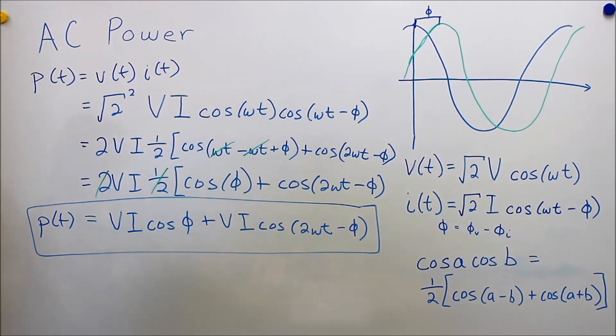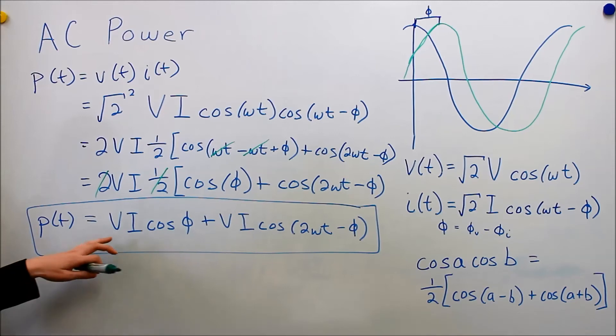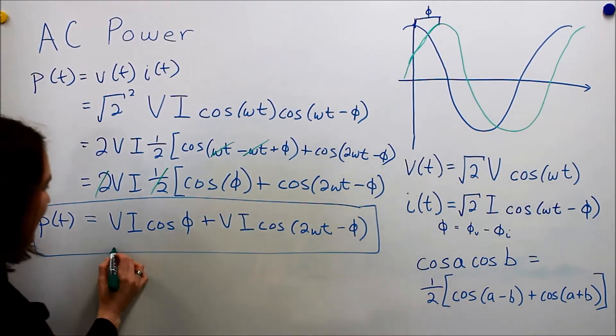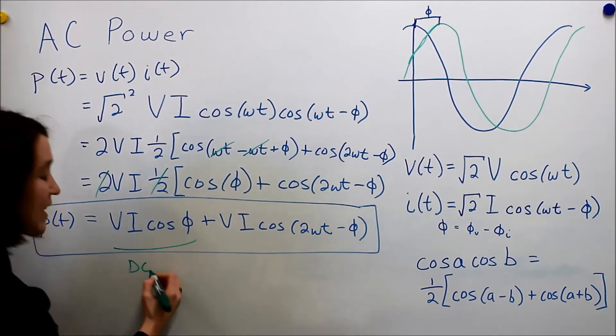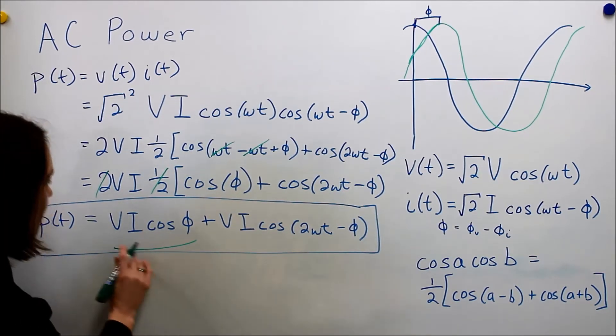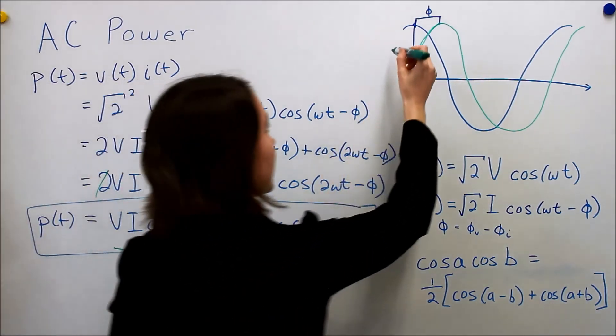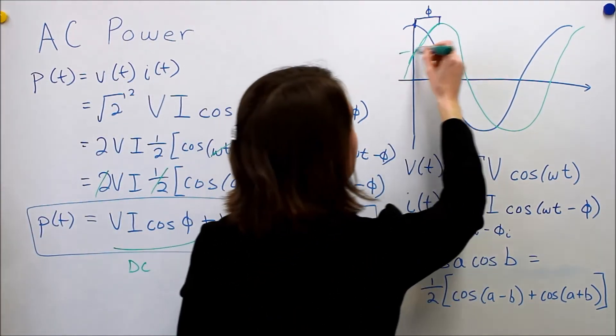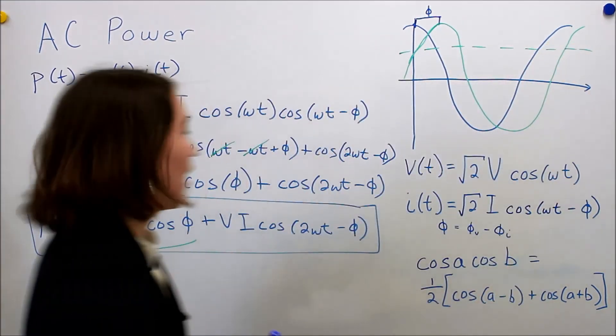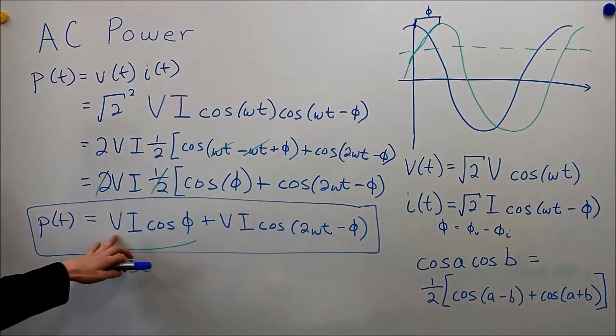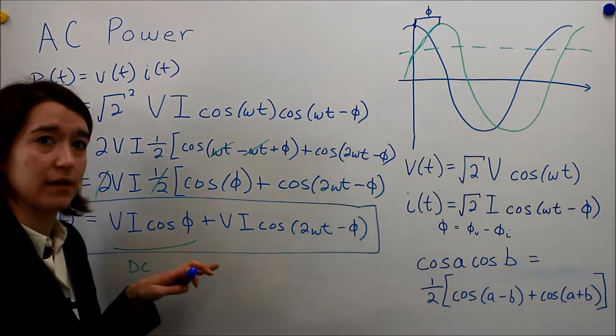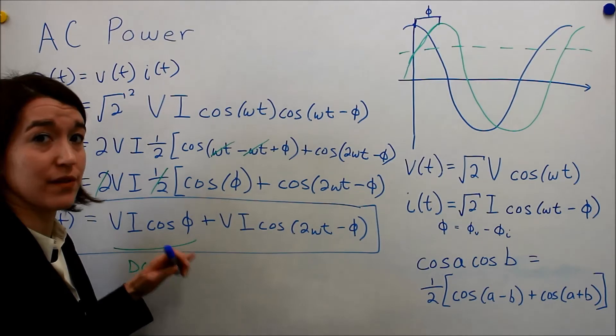And again, I'm really bad at drawing. But what you can think about this is, this is our DC component. So this is some offset, some DC offset. So we can think about it like this. There's some DC offset that's based on the RMS voltage and current, and then the phase difference, the cosine of the phase difference.